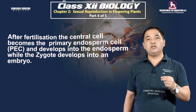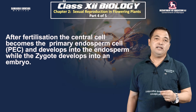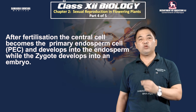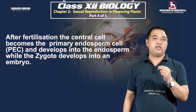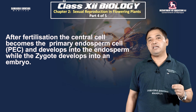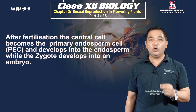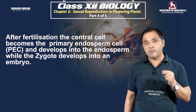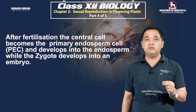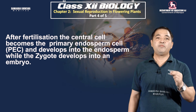Double fertilization results in the formation of the primary endosperm cell and the embryo. In flowering plants, double fertilization is a defining feature. The fusion events lead to both the embryo and the endosperm being formed within the developing seed.